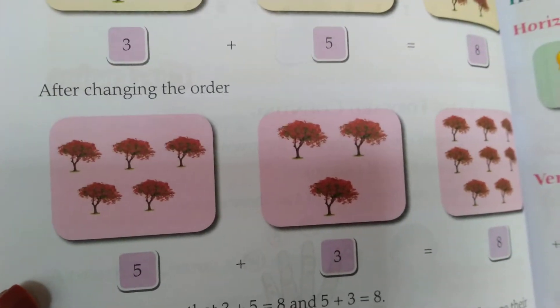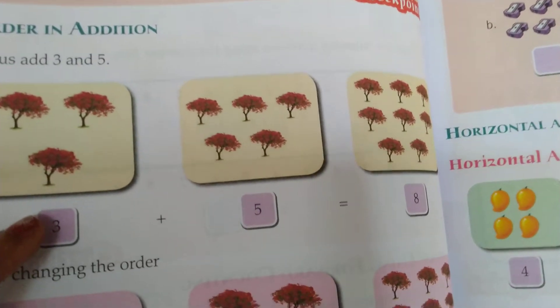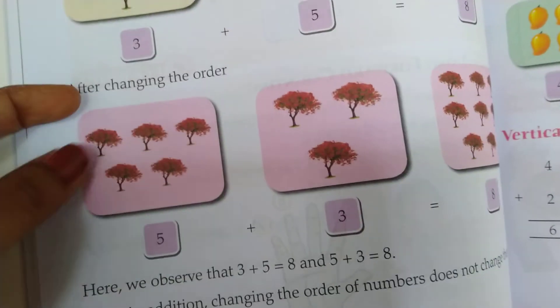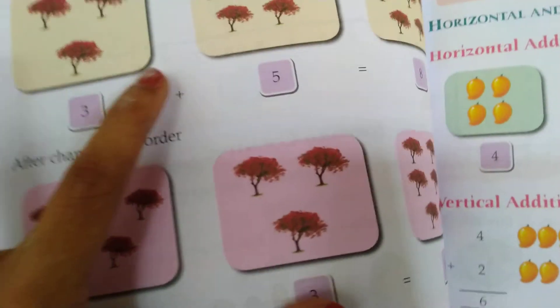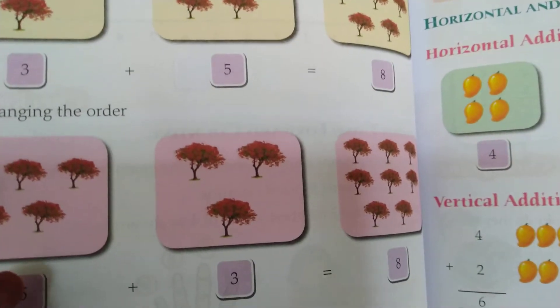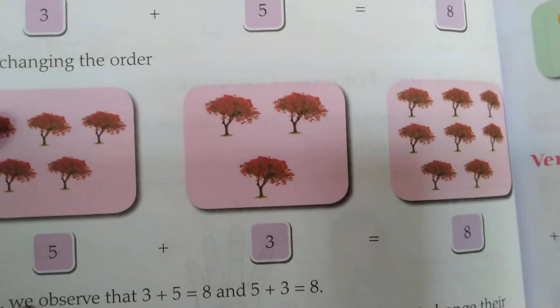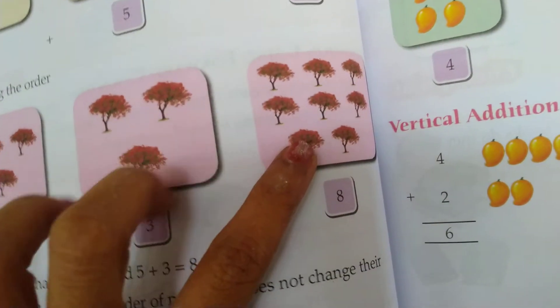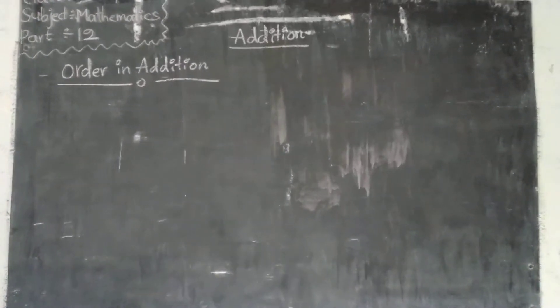In the same way, after changing the order: here first there are 3 trees, but now first we have 5 trees, then 3. The total is still 8. So what do you observe? If you change the order, the answer is the same.